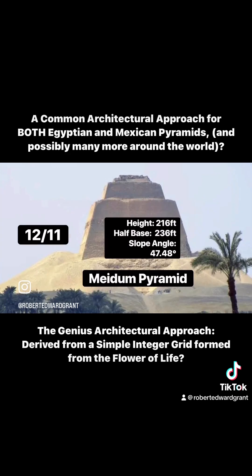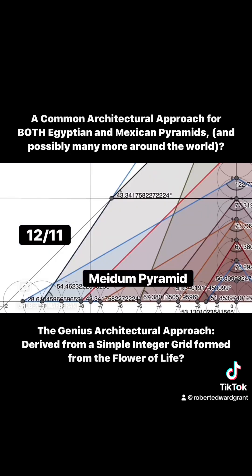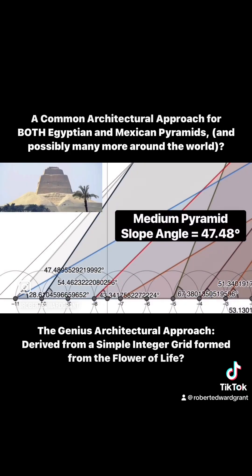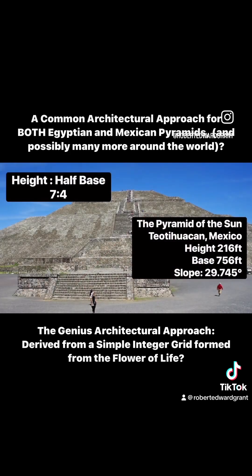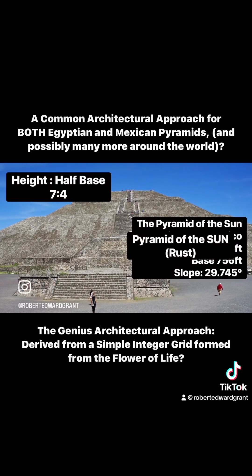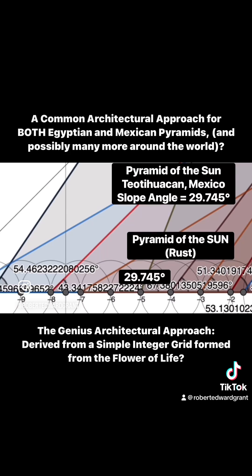And it's not only that, but also the other enigmatic pyramid — the Meidum Pyramid — that has all of its casing stones but is somehow believed to be unfinished. The Meidum Pyramid, based on its one-half base of 236 feet and its height of 216 feet, gives us a 47.48-degree angle, which also matches this grid pattern.